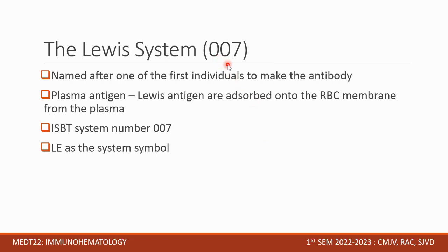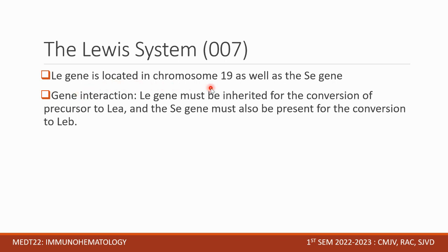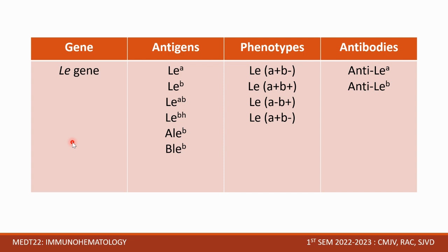Next we have the Lewis system, ISBT number 007, named after one of the first individuals to make the antibody. Lewis antigens are absorbed into the RBC membrane from the plasma — they are found in the plasma first. The system symbol is LE, and the LE gene is located on chromosome 19, along with the SE gene. For gene interaction: the LE gene must be inherited for conversion of the precursor to LEA, and the SE gene must also be present for conversion to LEB.